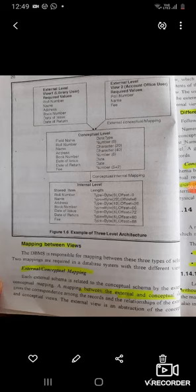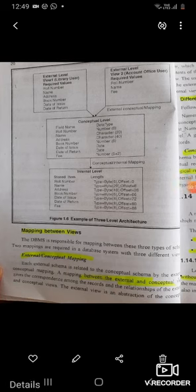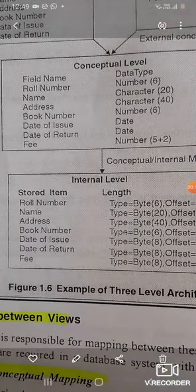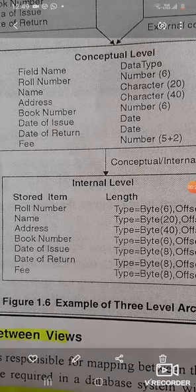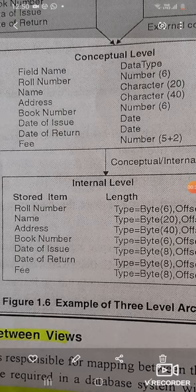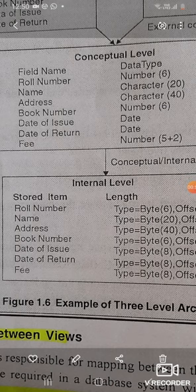Hello students. Our next topic is mapping. As you can see in the diagram, there are three views: external view, conceptual view, and internal view. In the conceptual view, the library record maintains data types such as roll number with 6 digits, name with 20 characters, address with 40 characters, book number with 6 digits, date of issue, date of return, and fees as a 5-integer with 2 decimal points.